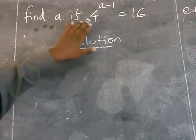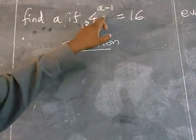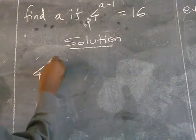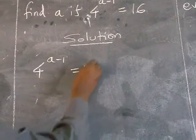We are required to find a if 4 power a minus 1 equals to 16. So, 4 power a minus 1 equals to 16.